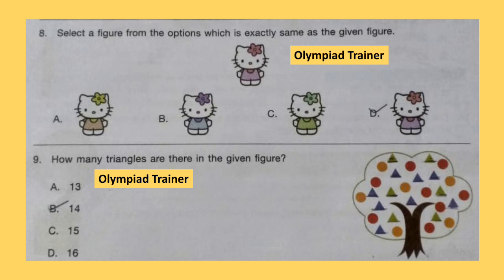Question 9. How many triangles are there in the given figure? You can pause the video and count the number of triangles. There are 6 green triangles and 8 blue triangles, so the total number of triangles is 14. Option B is the correct answer.